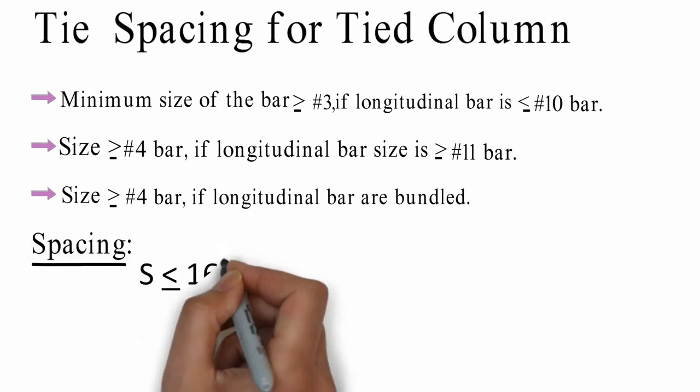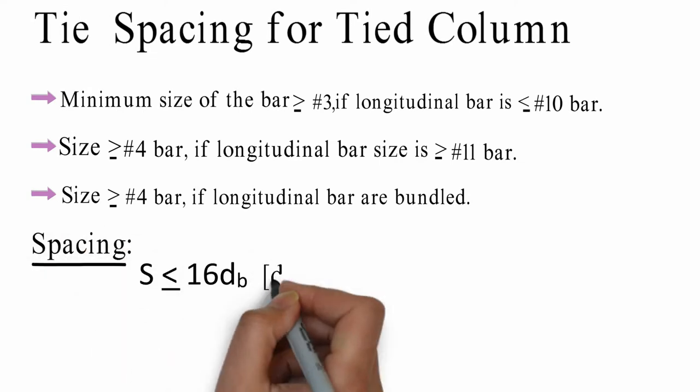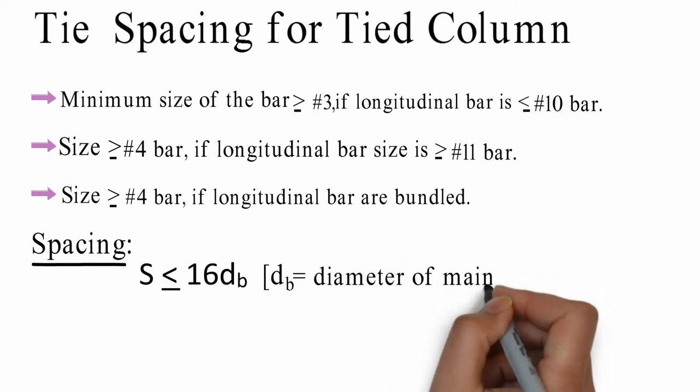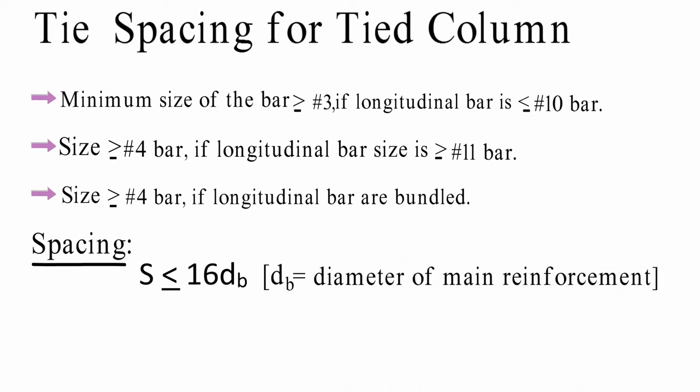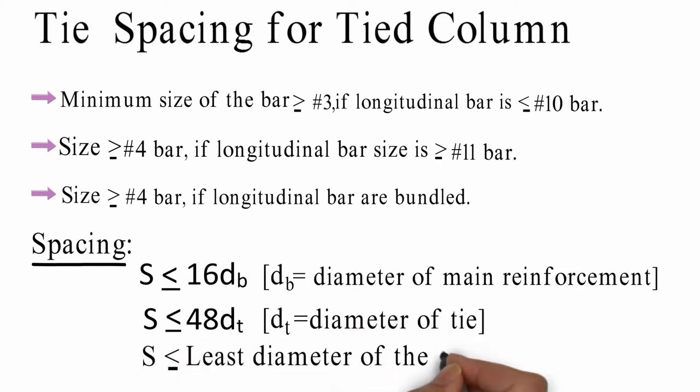Spacing S less than or equal to 16 dB, where dB equals diameter of main reinforcement. S less than or equal to 48 dt, where dt equals diameter of tie. S less than or equal to least diameter of the column.